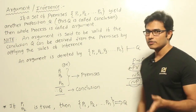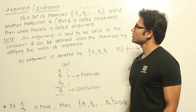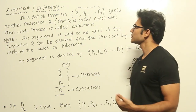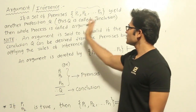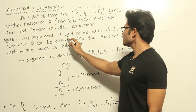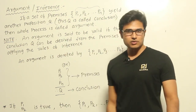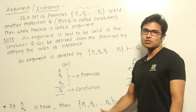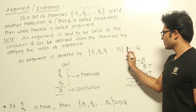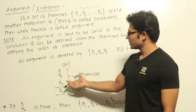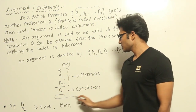If you assume there are some statements which are true — propositions called premises — from these premises we try to derive another proposition called the conclusion. This entire process is called an argument. An argument is said to be valid if the conclusion Q can be derived from the premises by applying rules of inference. An argument is denoted as P1, P2, P3, ..., Pn, then the conclusion Q.